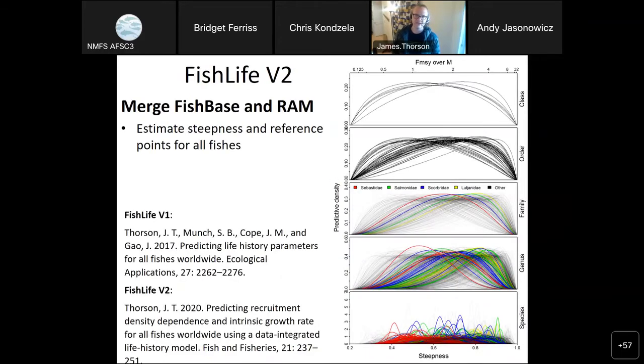In FishBase version 2, we added the RAM legacy stock recruit database. And for instance, can do the same Brownian motion model on steepness. Steepness is technically derived from the exchangeable parameter, which is the lifetime spawners per spawner. Using this Mengel approximation for FMSY over M, this is how you calculate a reference point for fishing mortality at maximum sustainable yield. If you fit a Brownian motion model on steepness, you can again see that Scorpaenidae, Sebastes, or a bunch of rockfishes typically have lower steepness than other taxa.